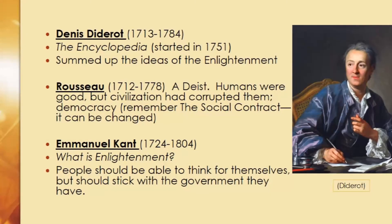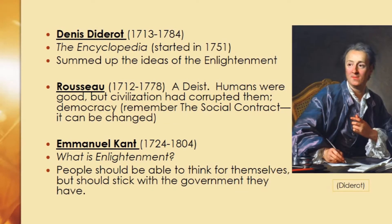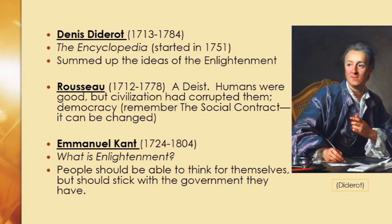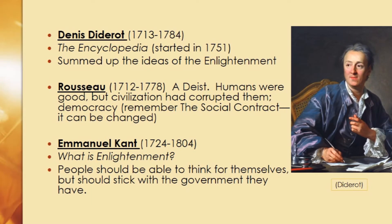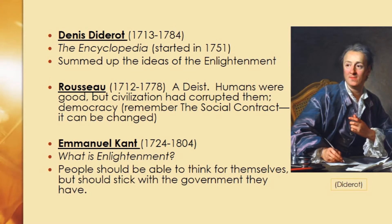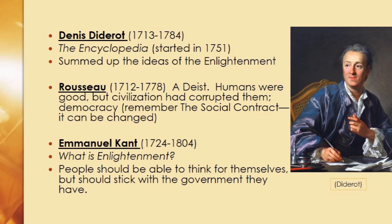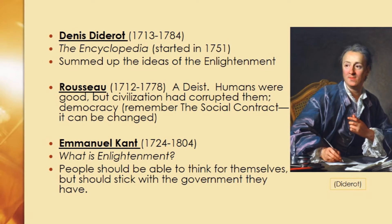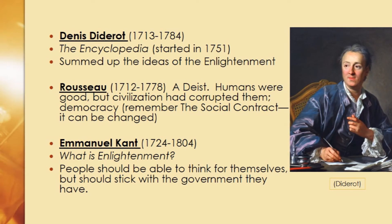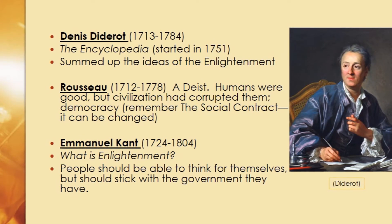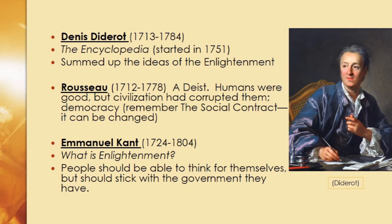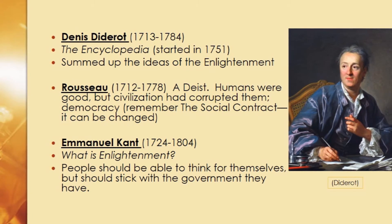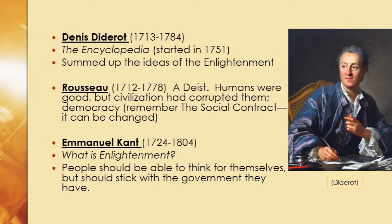During the Enlightenment period you also find the first movement to actually write down all of human knowledge. This was started by a man named Diderot, who edited a book called the Encyclopedia. He asked all the people involved in the Enlightenment movement to write down what they were learning and teaching, and this became the very first encyclopedia.